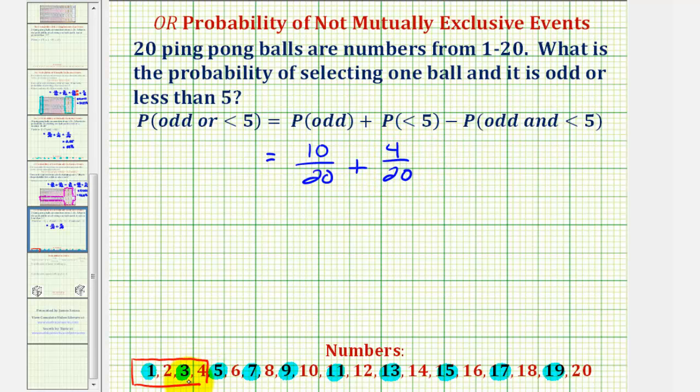But notice how we counted the number 3 and the number 1 in both probabilities. And therefore, now we have to subtract the probability that the ball would be both odd and less than 5, which would be when the ball is 1 and 3. Therefore, we have to subtract 2 out of 20, or 2/20. So we have 20 as a denominator, and then we have 10 plus 4, that's 14, minus 2, that's 12.